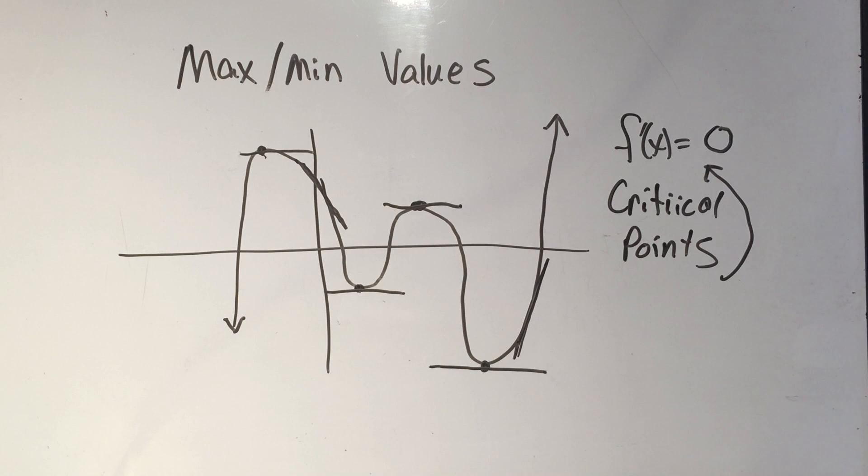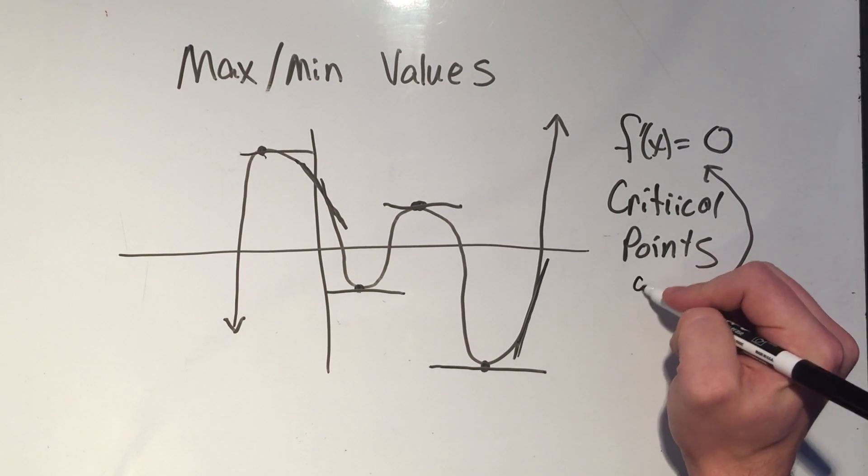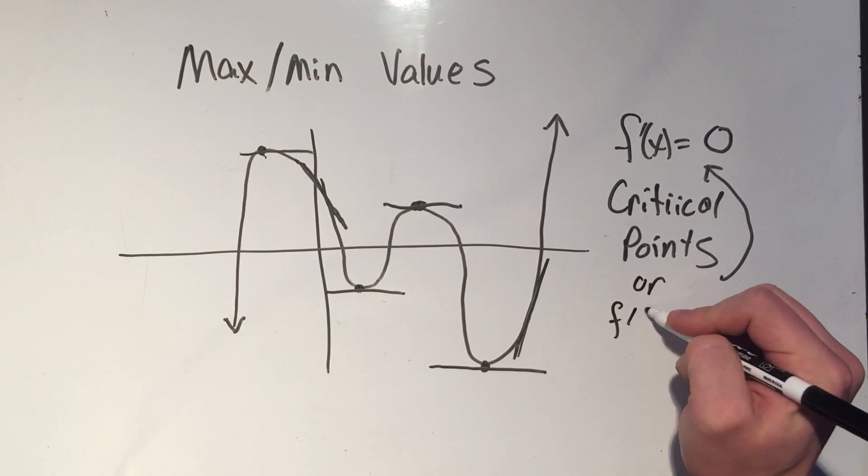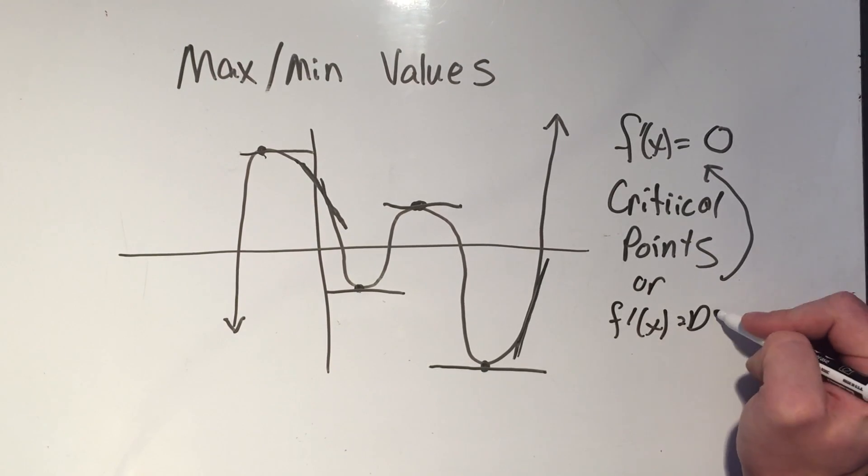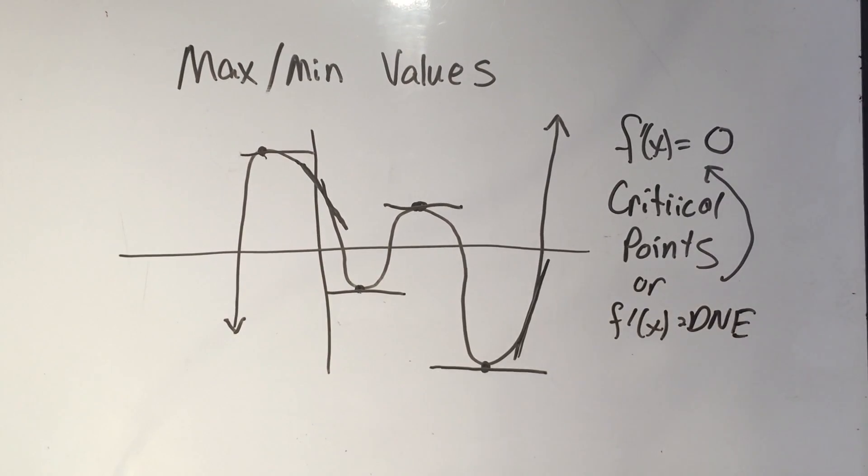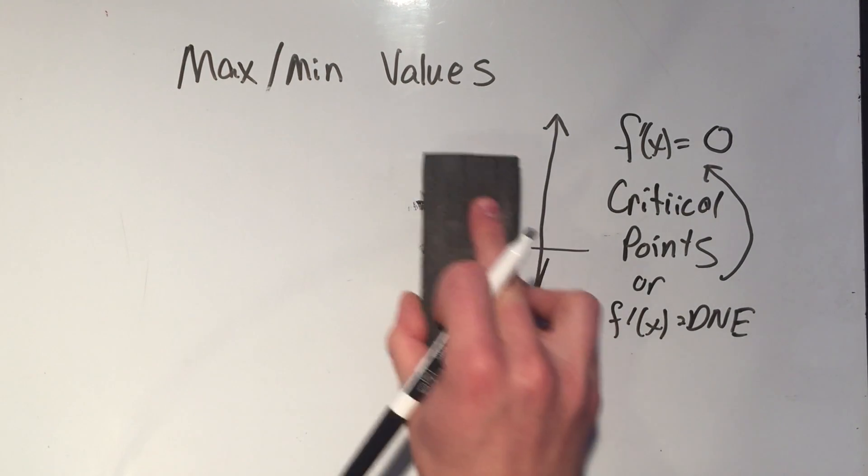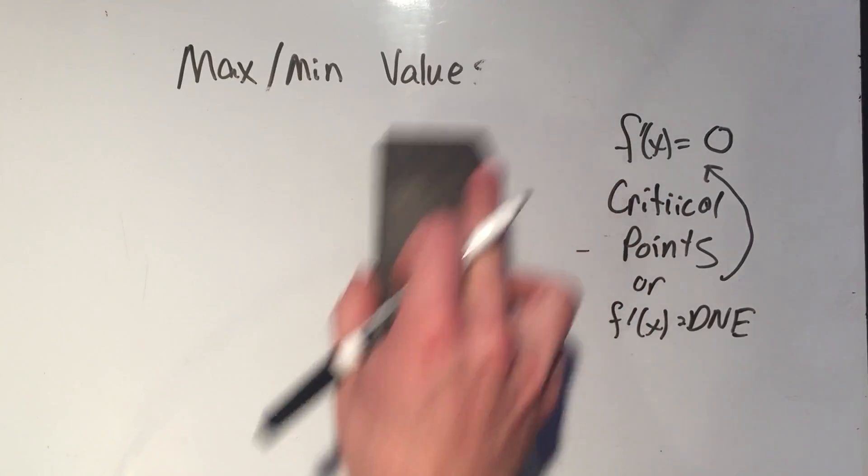Critical points are where the first derivative equals zero or the first derivative does not exist. Okay, so you'll be using critical points pretty often in the next few weeks. You take the derivative and you set it equal to zero.